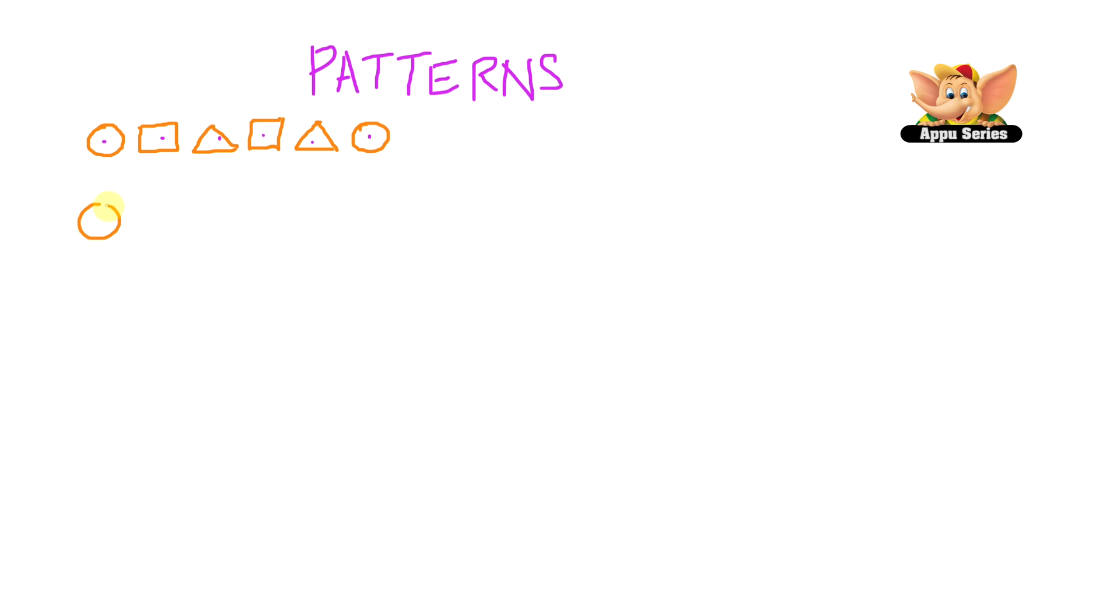What shapes do we have here? A circle, a square, and a triangle. So let's repeat them in an order like this. Now, what do you think? You can see the core of the pattern repeated one after the other, right? So this one is surely a pattern.